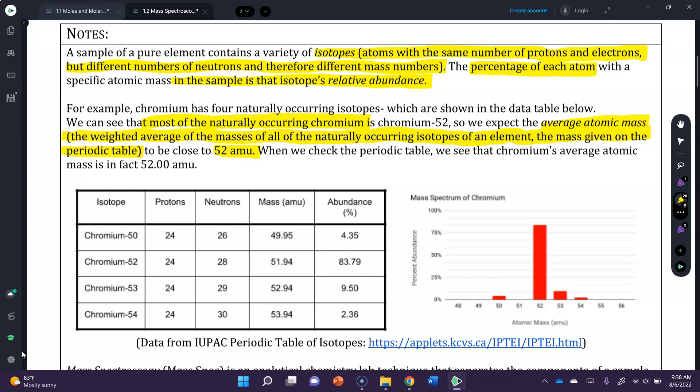When we check the periodic table, we see that chromium's average atomic mass is in fact around 52 amu, and you can verify that for yourself as well. And so we see here the graph of it, and then here we see a data table with the breakdown of each isotope and its percent abundance and the mass of each isotope individually.